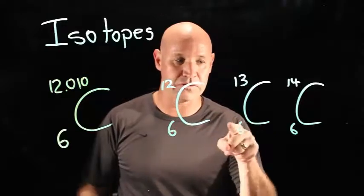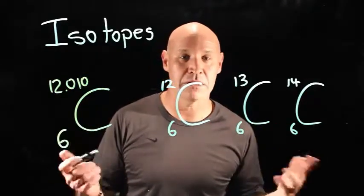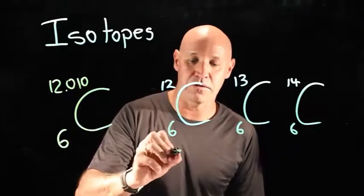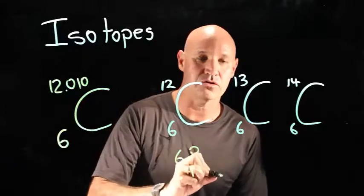So, if they've all got the same number of protons, what's different? Well, it must be the number of neutrons. So if carbon 12 has 6 protons, it must have 6 neutrons.